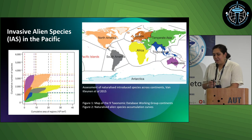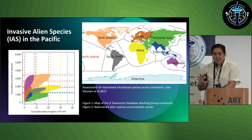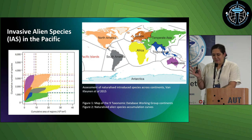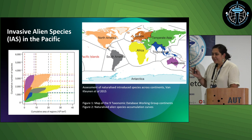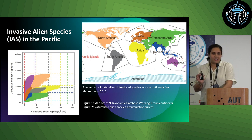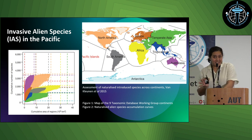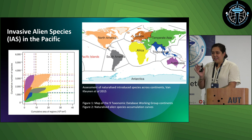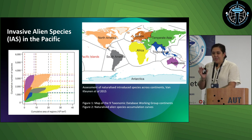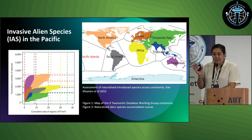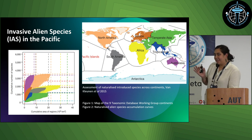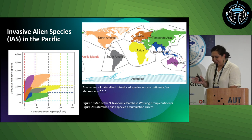This is an example of invasive species in the Pacific, looking at it from a global context. The map is quite difficult to read, but if you focus on the graph, the red line represents invasive species in a global context. Looking at the area per cumulative invasive species, the Pacific suffers from the highest number of cumulative invasive species per kilometre.